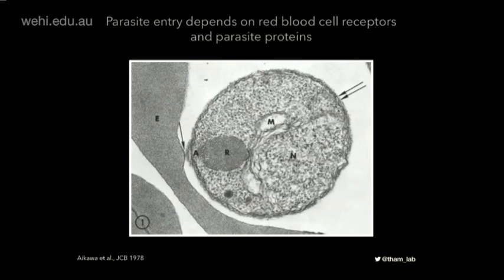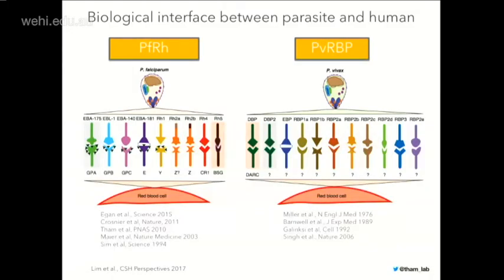We're interested in understanding how the merozoite forms an intimate connection with the red cell surface — specifically what parasite proteins recognize human red blood cell proteins, because if we understand that interaction we can find ways to block invasion. For falciparum, the red blood cell receptors include glycophorins, complement receptor 1, and basigin. We'll come back to the interaction between RH5 and basigin.